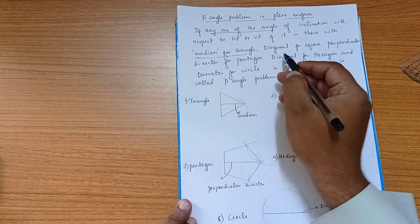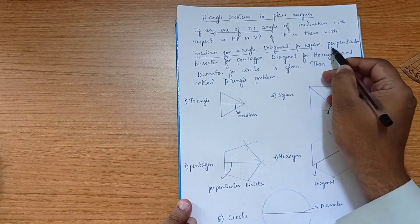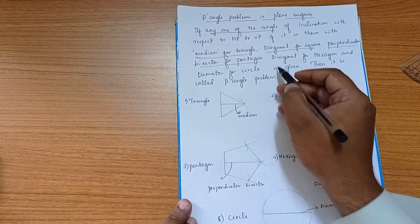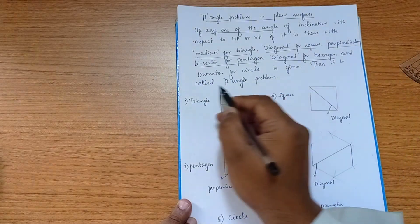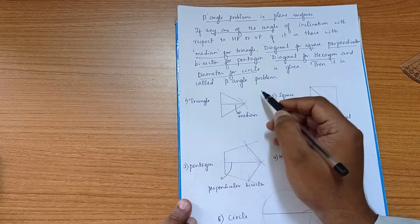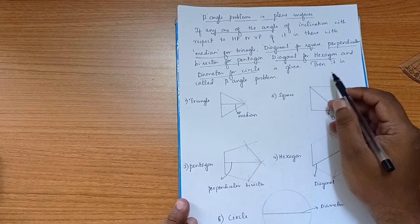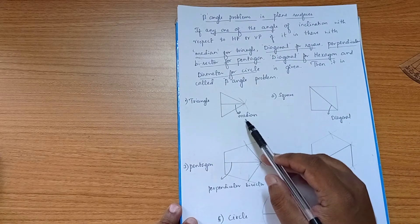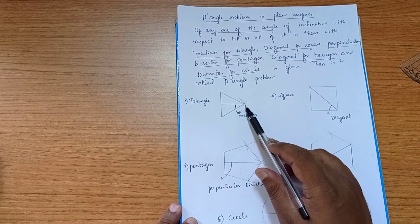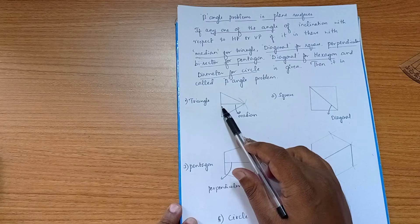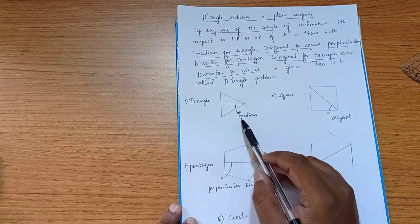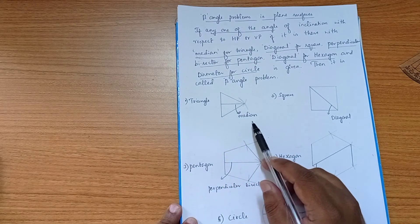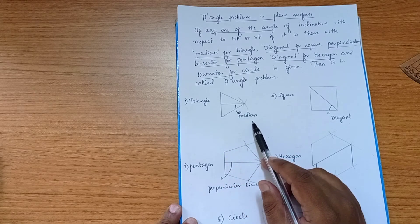These words are important — median for triangle, diagonal for square, perpendicular bisector for pentagon, diagonal for hexagon, and diameter for circle. If any of these are given, it is called a beta angle problem. For a triangle, a line drawn from a corner point to the exactly middle of the opposite side is called the median. So for a triangular type of problem, the word 'median' will be mentioned.